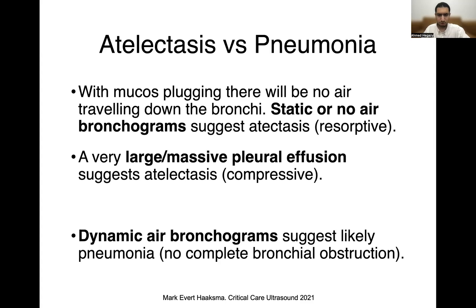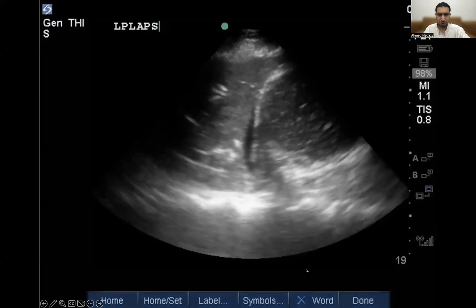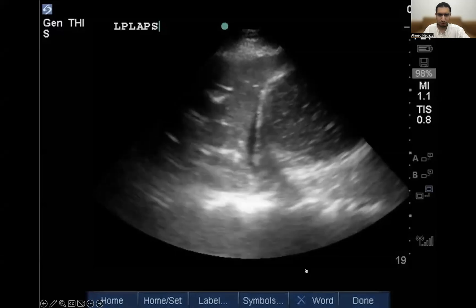When you look at a patient with pneumonia, the bronchi are usually patent and the inflammation is usually at the level of the alveoli. So you will find that air is moving in and out of the bronchi. The consolidation is mostly at the level of the alveoli. When you see air bronchograms that are dynamic — that are moving up and down — this suggests likely a pneumonia because there's no complete bronchial obstruction.